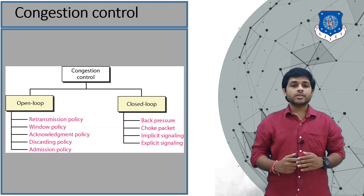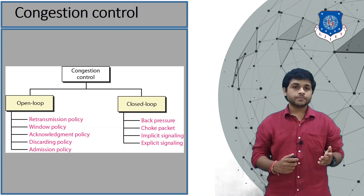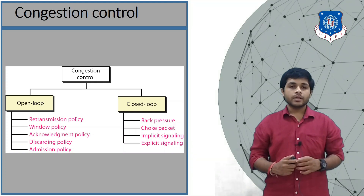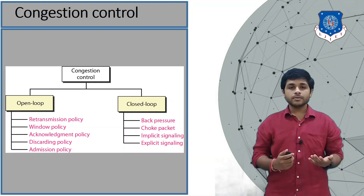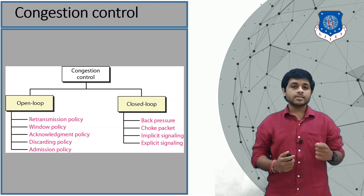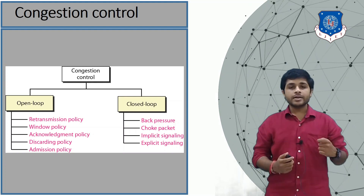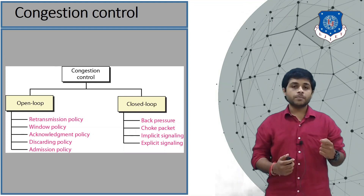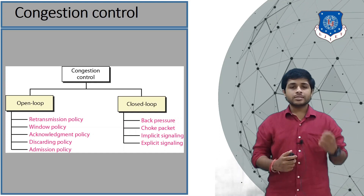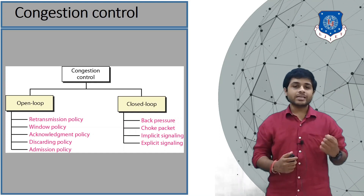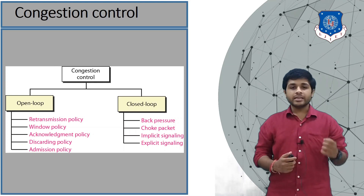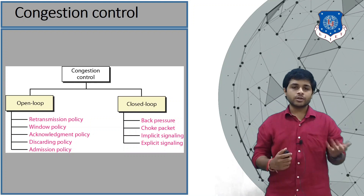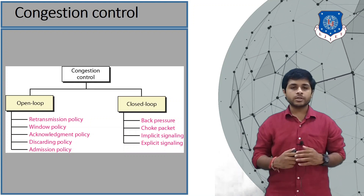Let's discuss open loop congestion first. The first type is the retransmission policy. The retransmission policy states that when a sender needs to retransmit a packet, the rate of retransmission should be lower. Suppose the sender has sent a packet and has not received any acknowledgement yet, and it has waited for only a very short amount of time before concluding it needs to retransmit.